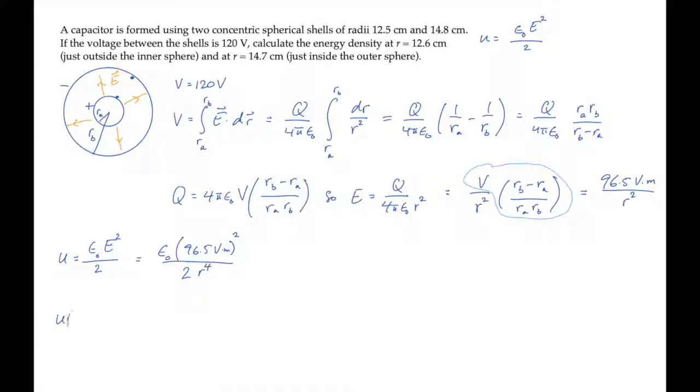At the inner point, 12.6 centimeters, we get this value for the energy density. At the outer point, 14.7 centimeters, we get this smaller value. So we see that the energy density is decreasing as we move out in radius.